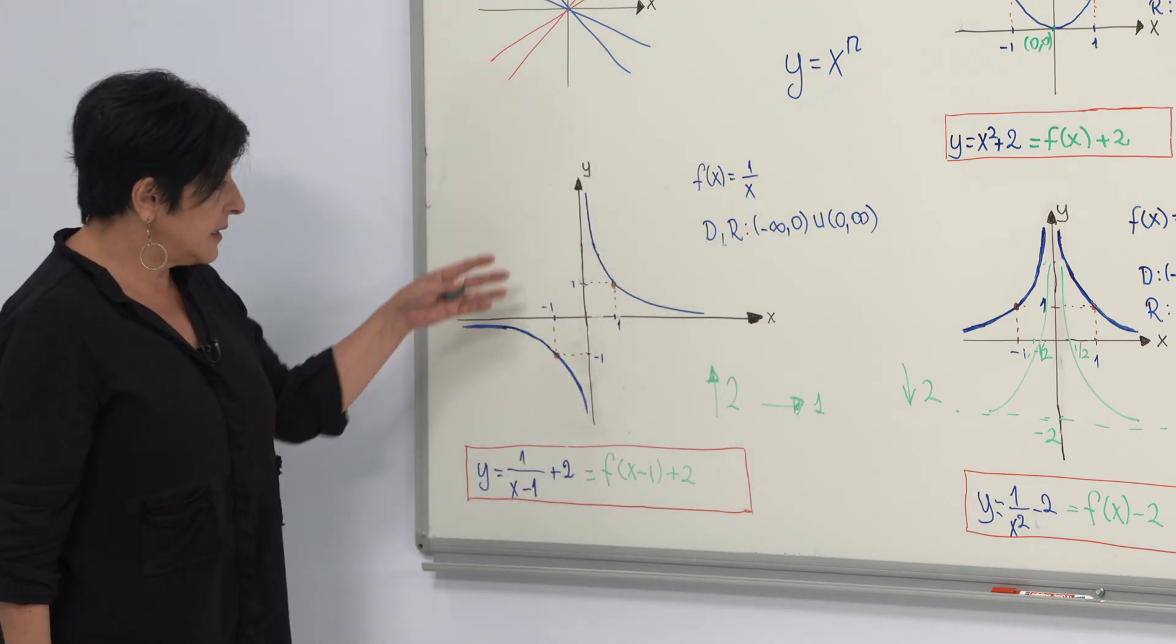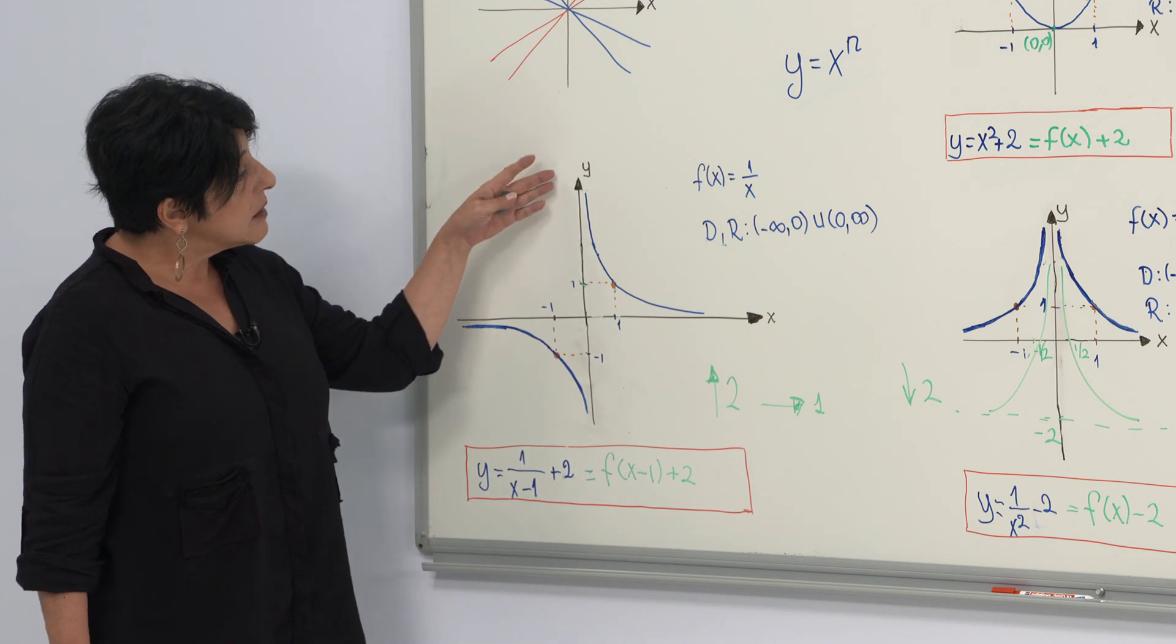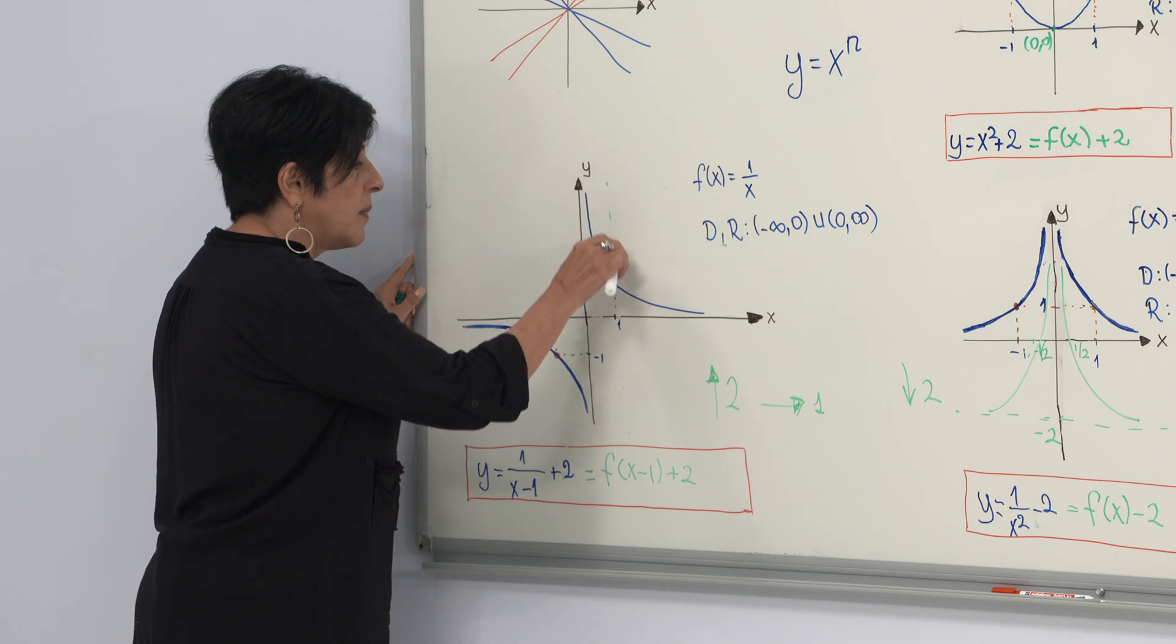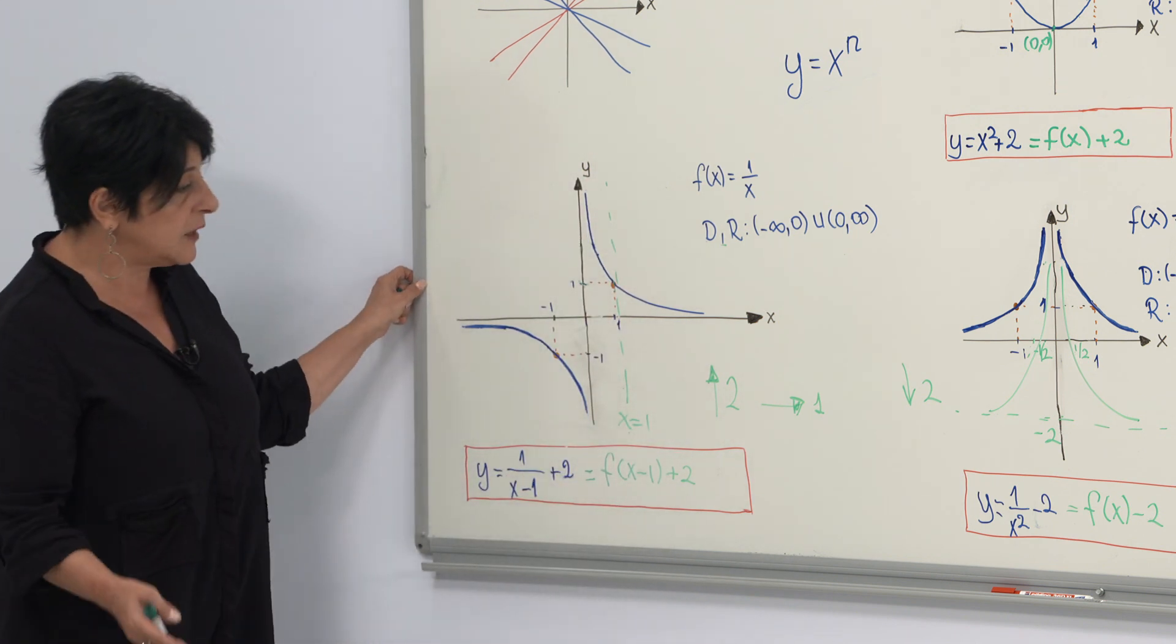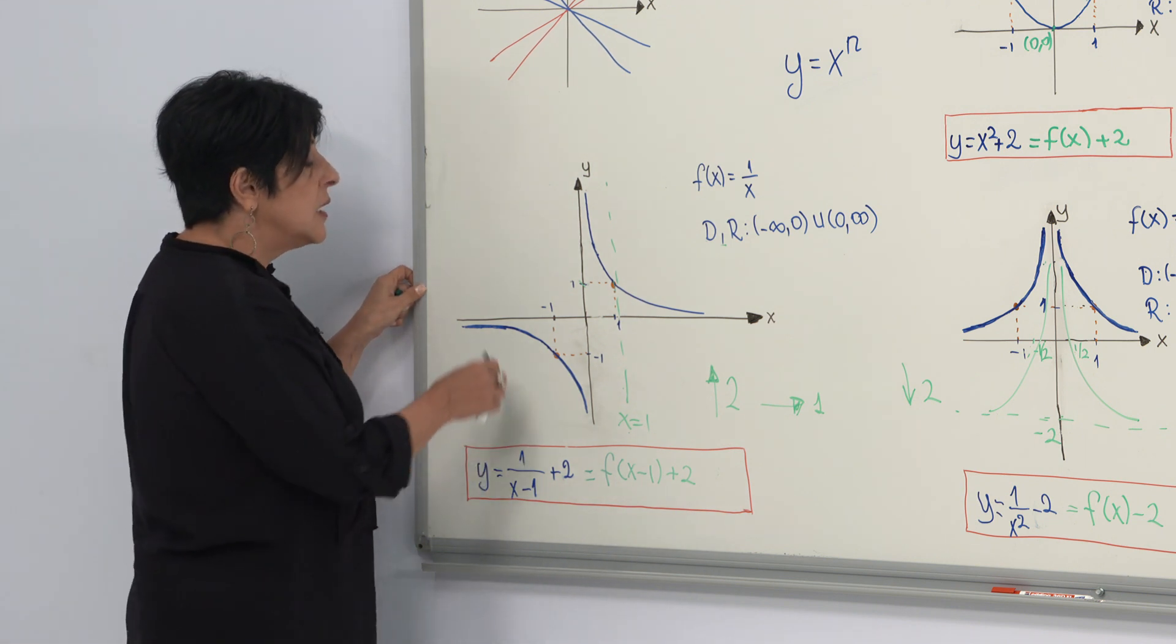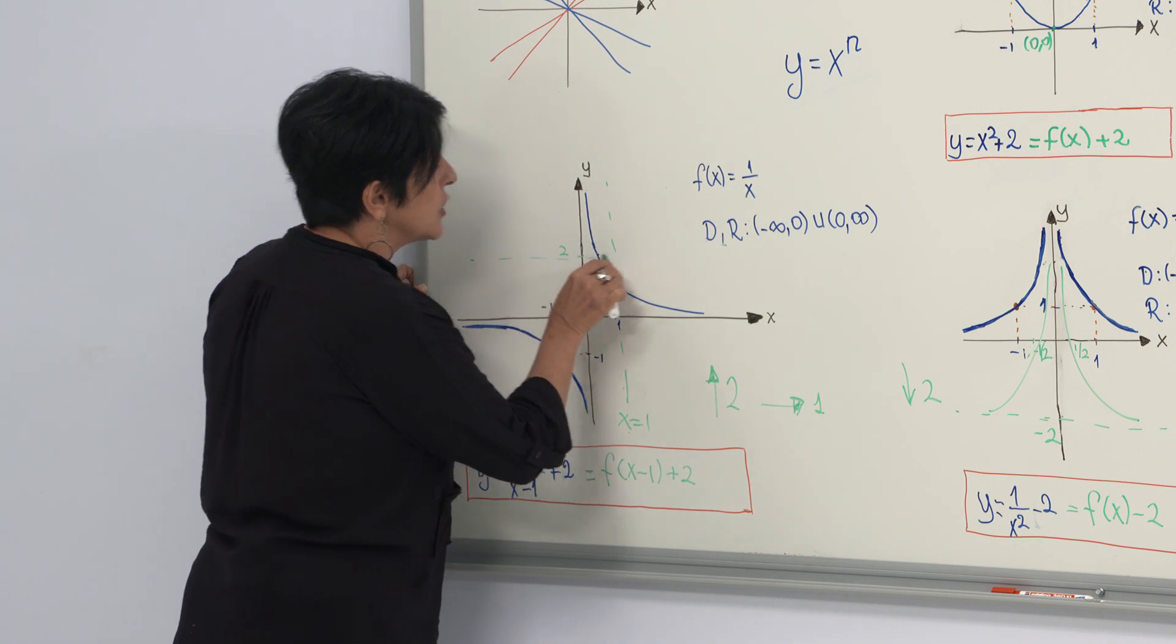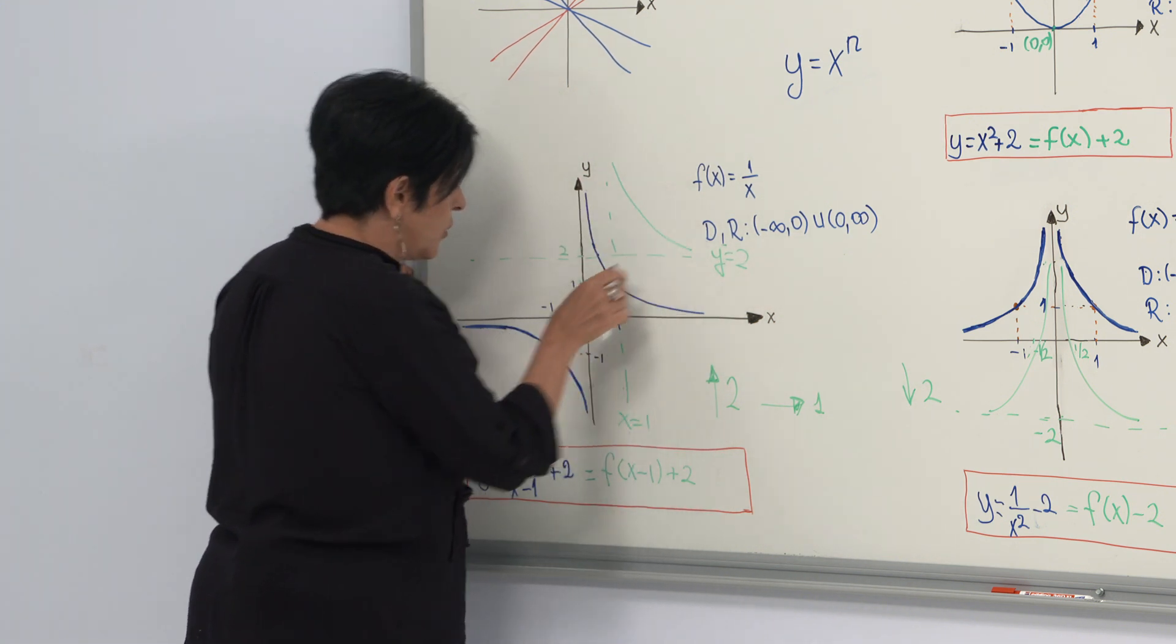Now, again, it has a vertical and horizontal asymptote. If you shift it right one unit, then your vertical asymptote will come at this point, and the equation of this one will be x equals 1. And if you shift it up by two units, then your horizontal asymptote will come to this point, and its equation will be equal to y equals 2. And this will be your new graph.